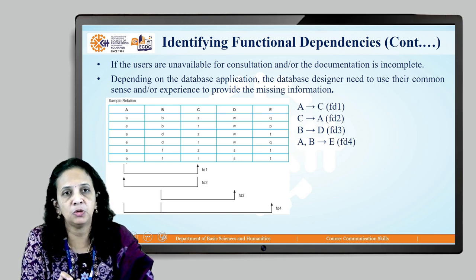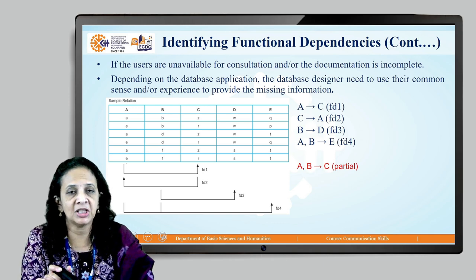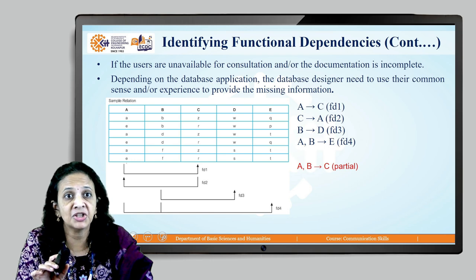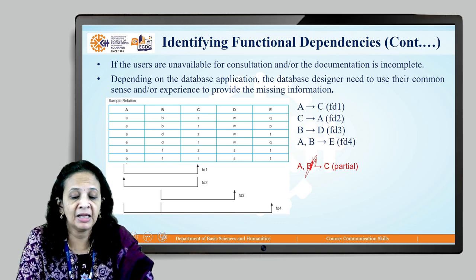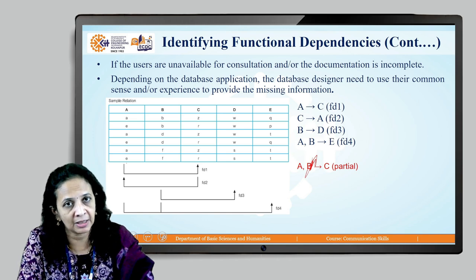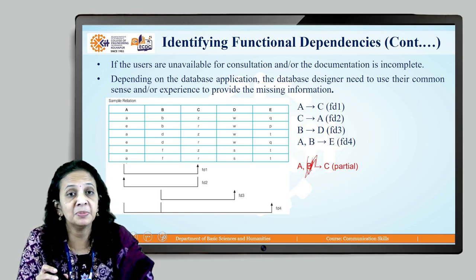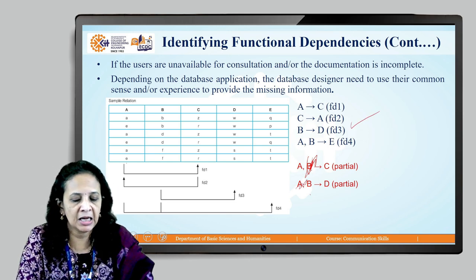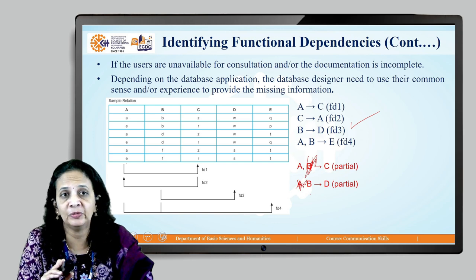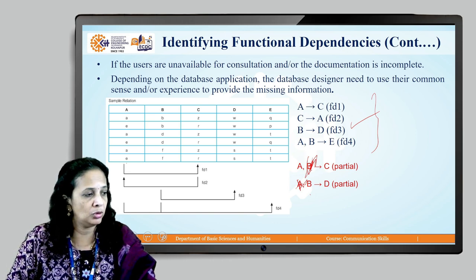If we know nothing about the relation, we identify functional dependencies from the given instance only — as done in the earlier A, B, C, D, E example. From that instance, we found A → C, C → A, B → D, and AB → E as full functional dependencies. AB → C and AB → D are partial functional dependencies because removing B still leaves A → C, and removing A still leaves B → D — these will be used in the context of second normal form.